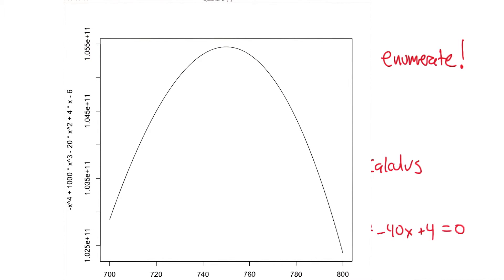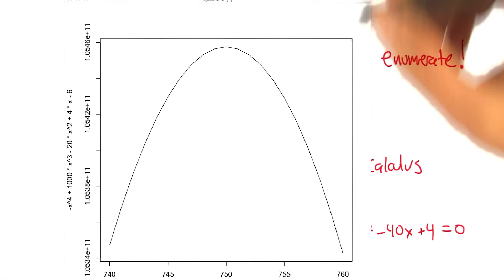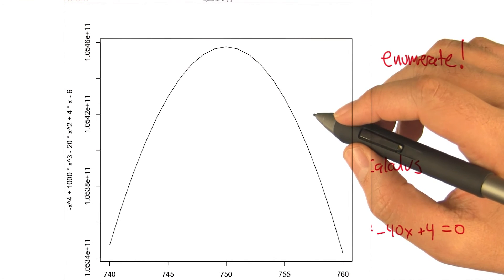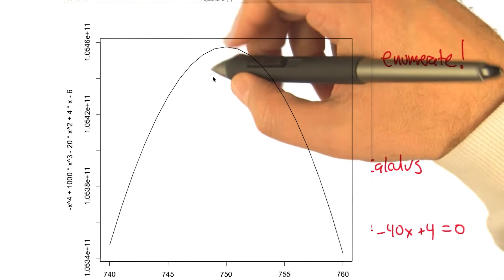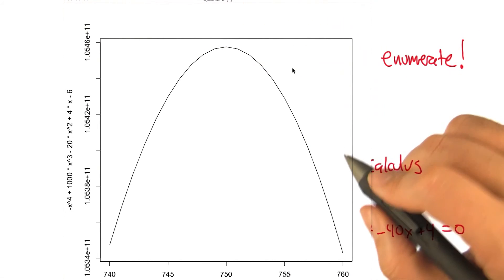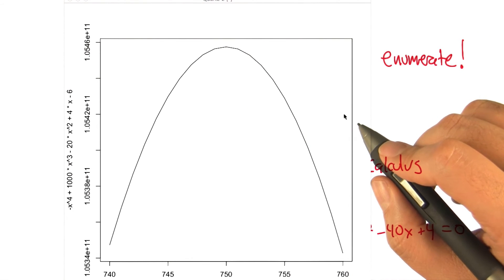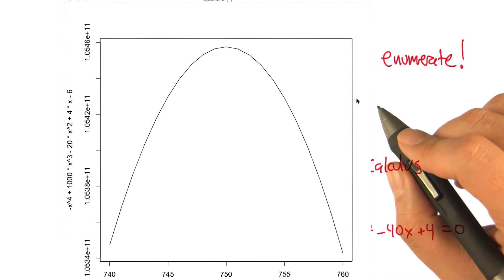Nice and pointy. All right. So how about that one? How about 740 and 760? So we really are kind of getting into the nitty gritty here. So for the quiz, we accepted anything between 745 and 755. But in fact, we can keep zooming in and we can use calculus and we can really hone in on what the tippy top is there. But that's not so important right now.